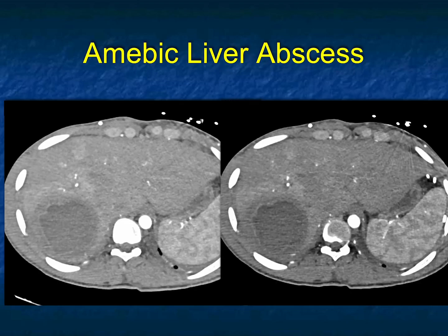This was an amoebic abscess. Amoebic abscesses, even in Baltimore, do occur — people do foreign travel. A cystic lesion in the right lobe of the liver with a thick rim is not specific for amoebic abscess, but it's something you definitely need to think about.